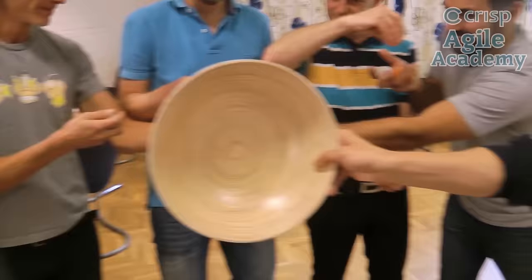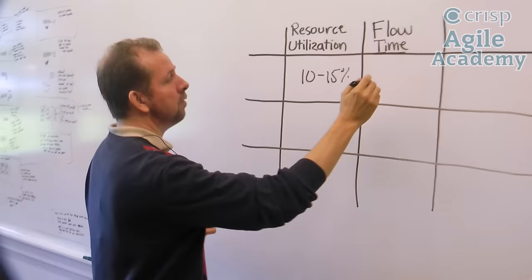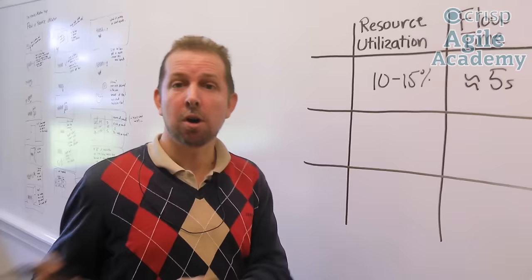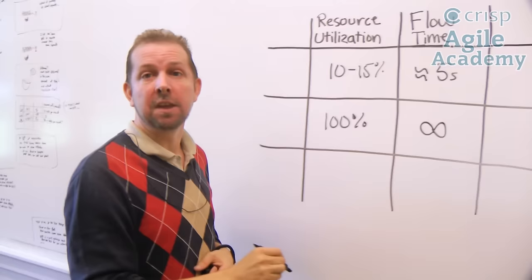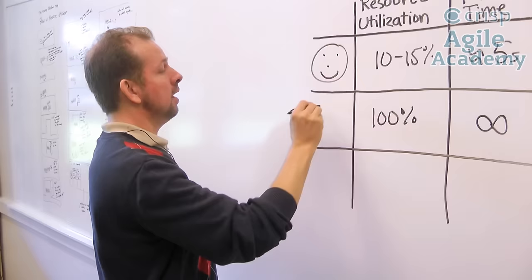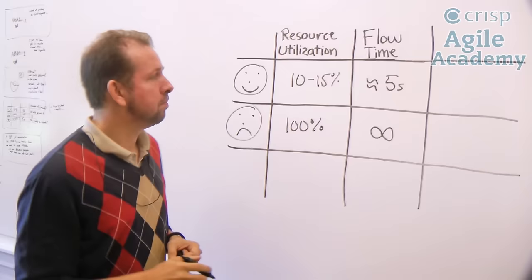In the first scenario, we had about 10 to 15% resource utilization — only one hand was at work out of the eight — and the flow time was somewhere around five seconds, as in how long it took to actually deliver a ball. In the second scenario, we had 100% resource utilization, maybe even more, and our flow time was infinite. We never actually got anything done. So here we have a happy customer getting stuff delivered; here we have an angry customer getting nothing delivered.